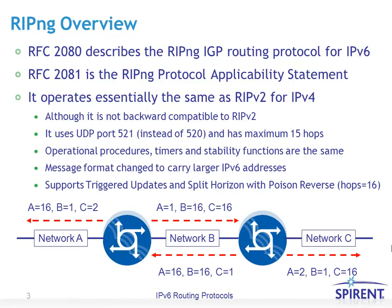The message format has changed slightly to carry larger IPv6 addresses. It also supports triggered updates and split horizon with poison reverse — it will re-advertise routes back out the same interface it received them on, but will advertise them with a hop count equal to 16.